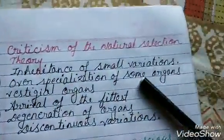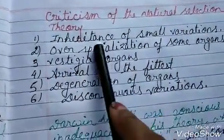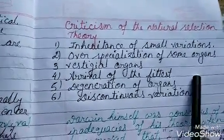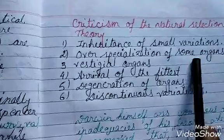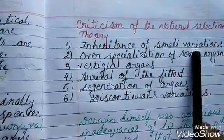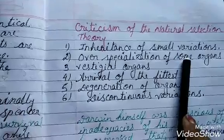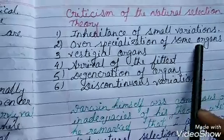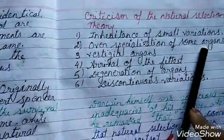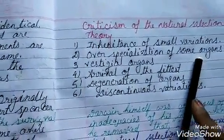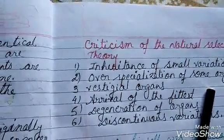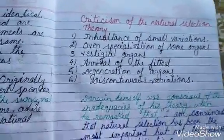There are some criticisms of the natural selection theory. First is inheritance of small variations. According to the theory, only useful variations are transmitted to the next generation. But sometimes small variations which are not useful are also inherited. Over-specialization of some organs, like tusks of elephants and antlers of deer, have developed so much that instead of providing usefulness to the possessor, they often cause hindrance to them.